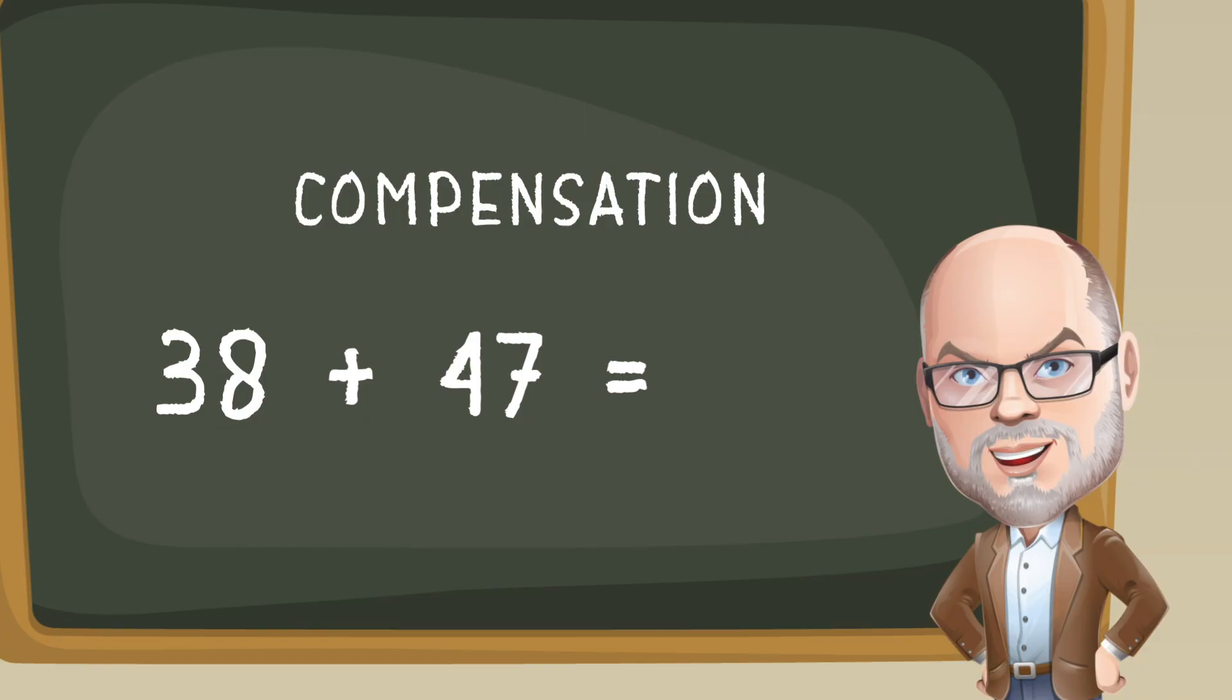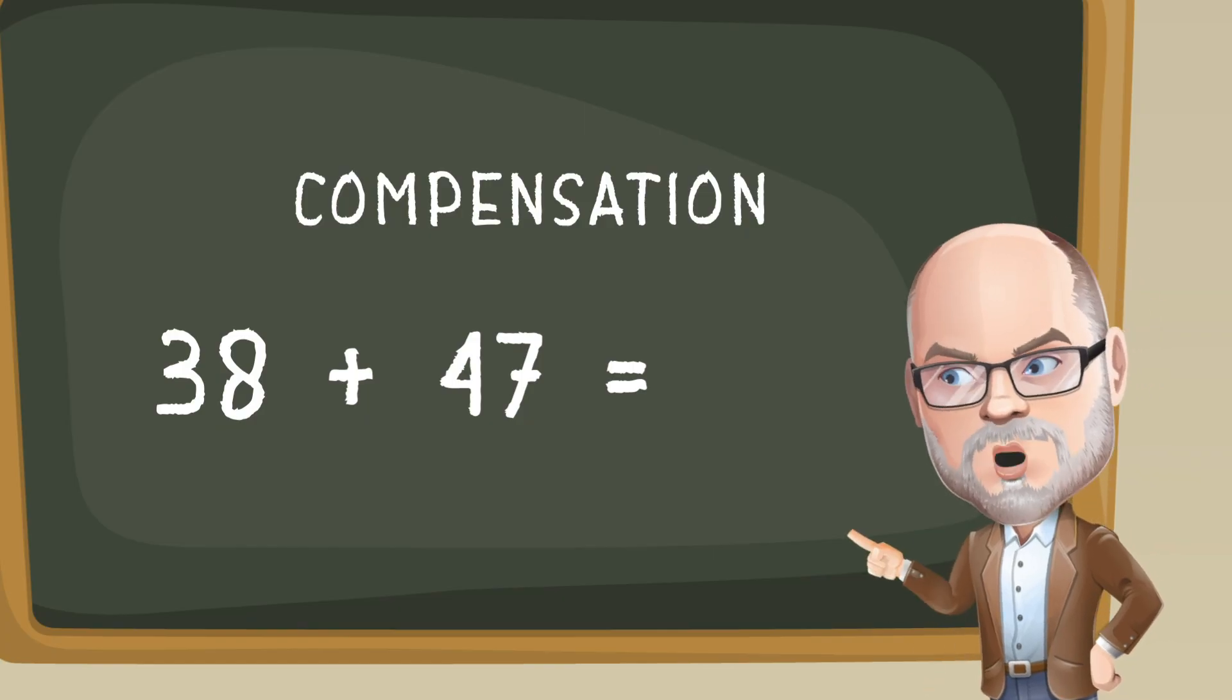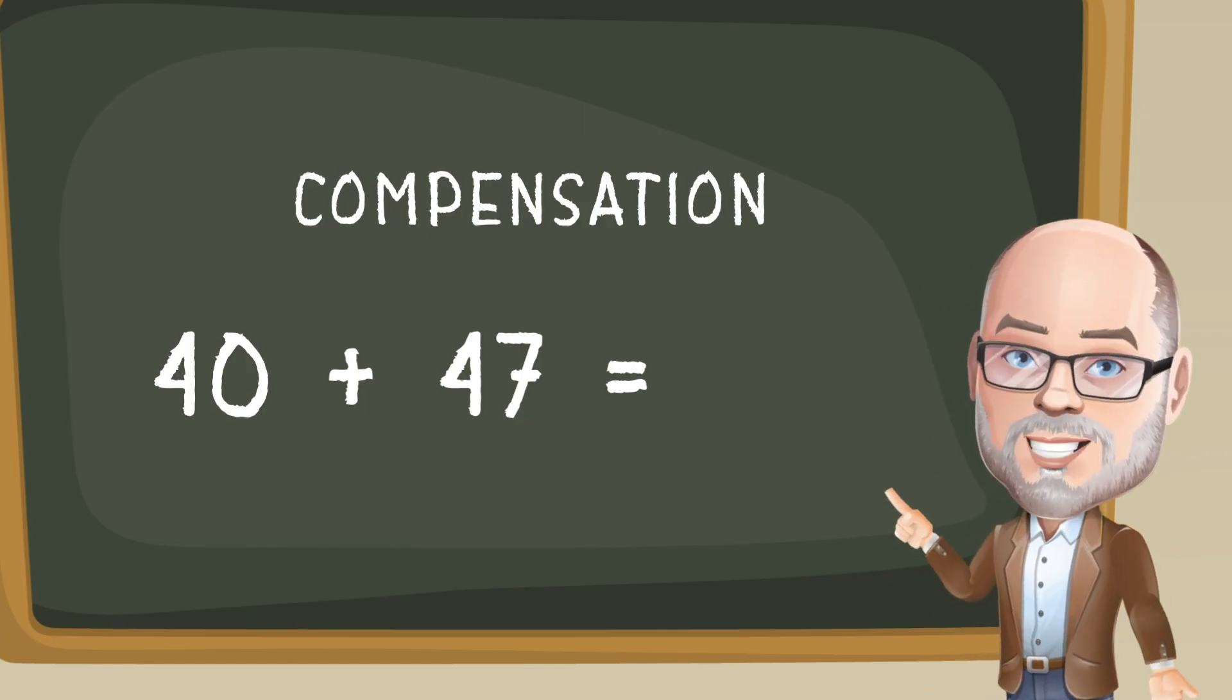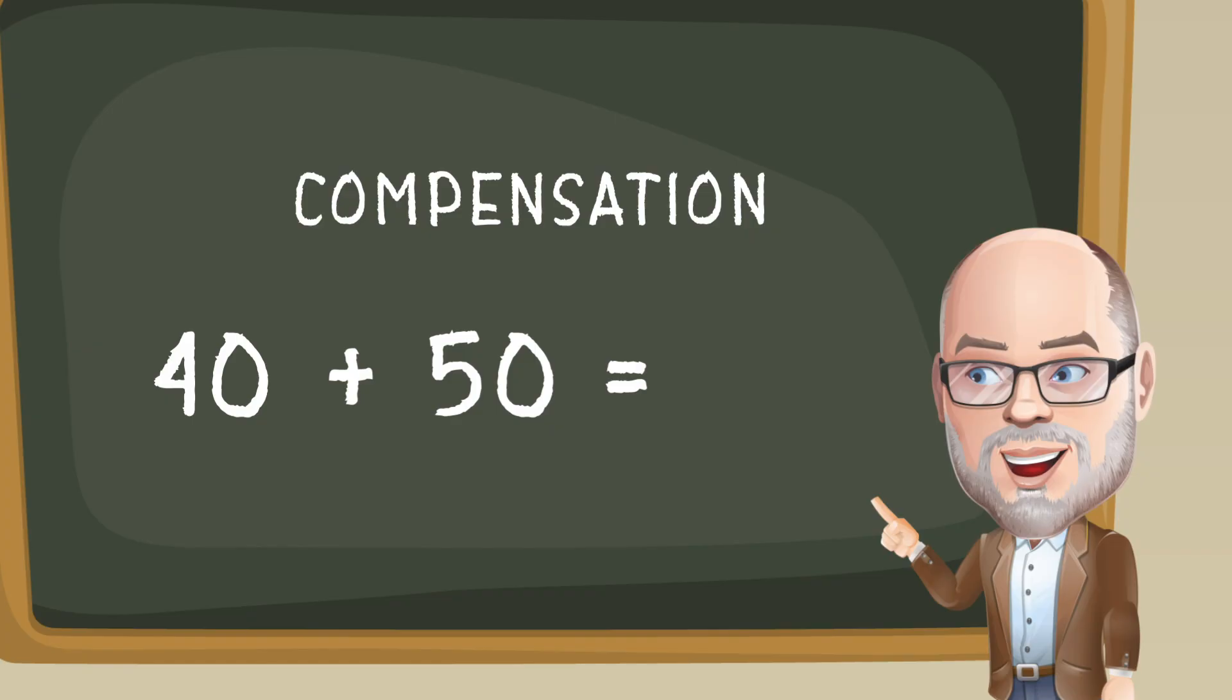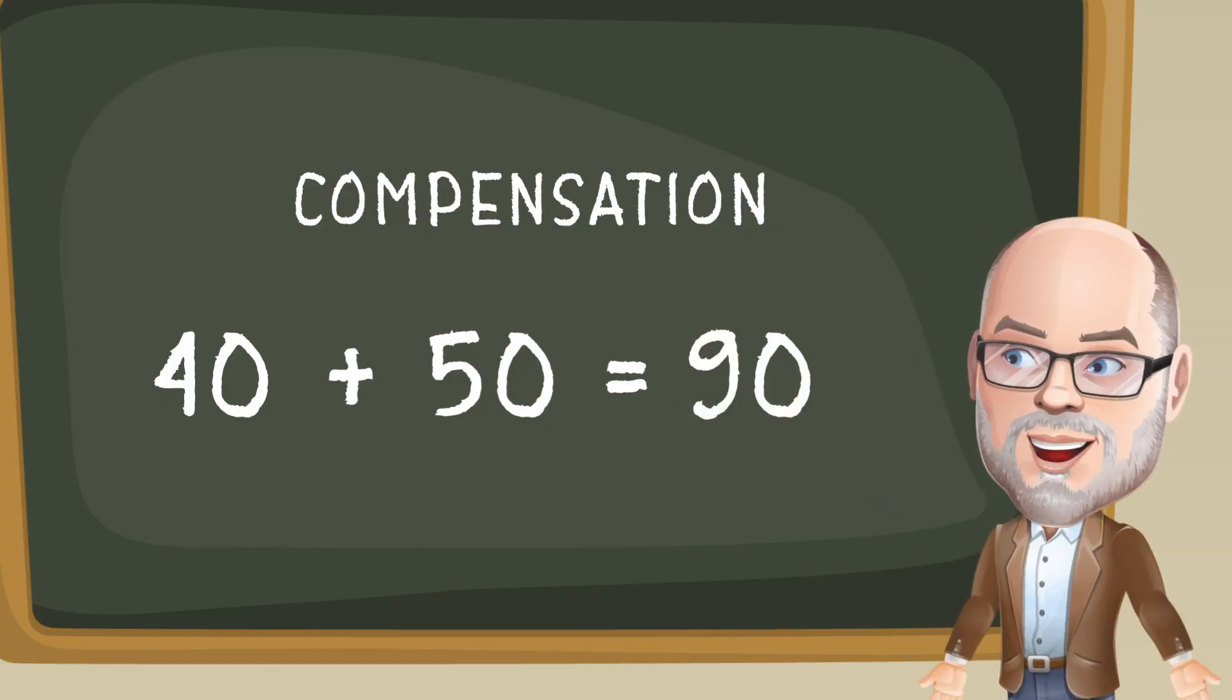Let's try it with 38 plus 47. These numbers aren't easy to think about, so we can adjust 38 by 2 to make it 40 and adjust 47 by 3 to make it 50. Now 40 plus 50 is 90.